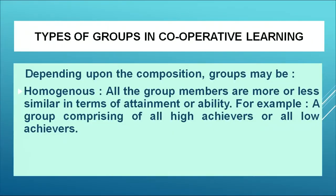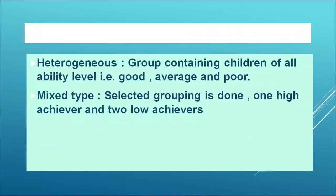Now, I am going to explain how groups are formed in cooperative learning, since the whole cooperative learning process revolves around groups. Groups may be formed in three ways depending upon composition. The first is homogeneous — all group members are more or less similar in terms of attainment or ability, for example a group of only high achievers or low achievers. The second is heterogeneous — consisting of children of all ability levels: good, average, or poor. The last is the mixed type group, combining one high achiever with two low achievers.